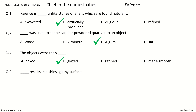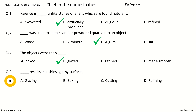Dash results in a shiny, glassy surface. The options are: glazing, baking, cutting, refining. And the answer is glazing. So, glazing results in a shiny, glassy surface.